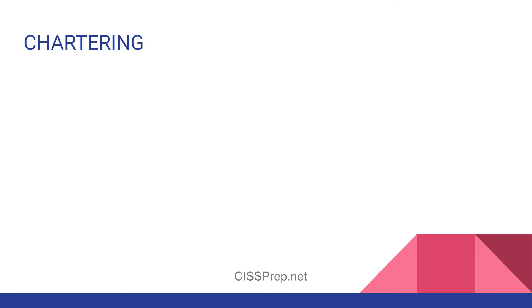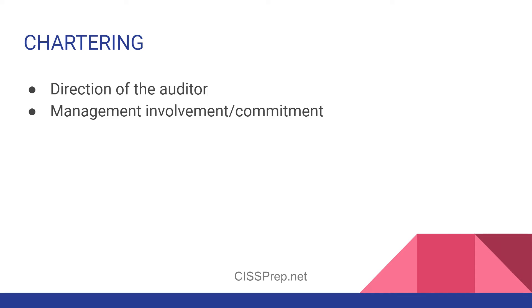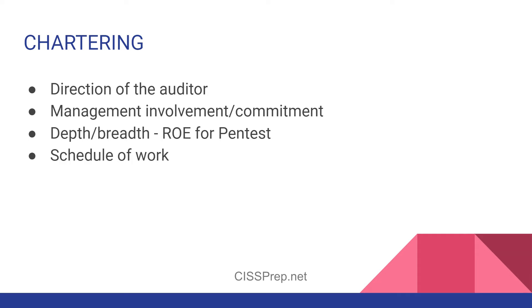Now let's look at the various steps involved. Since there are similarities, pay attention to what happens at each step rather than which specific assessment type it belongs to. Chartering includes the following activities: management involvement should support and direct activities at the direction of the auditor; it's where the depth and breadth of the assessment is decided. With penetration testing, this is governed by the rules of engagement — a legally enforceable agreement outlining what can and can't be done. Chartering is also where the schedule, reporting methods, and stakeholder management plan are decided, including identifying experts for interviews and providing test accounts. The contract with any external entities is also signed here.